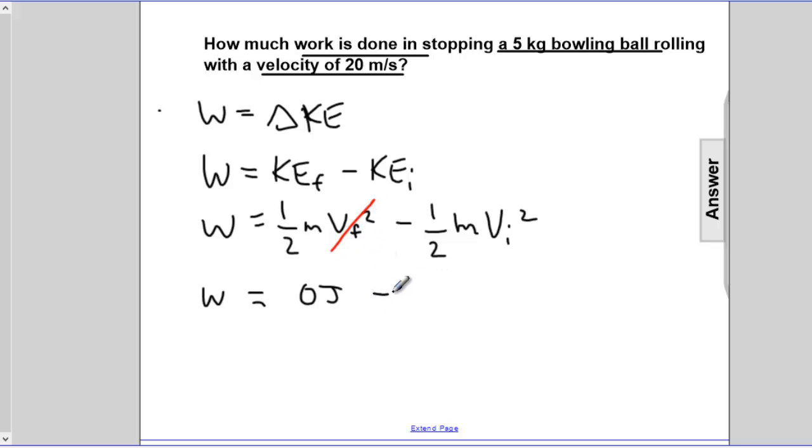minus ½ m. That's going to be 5 kg times the square of the velocity, 20 meters per second, quantity squared. We'll square the numeric value as well as the units, and we'll end up with kg meters squared per second squared, which are joules.